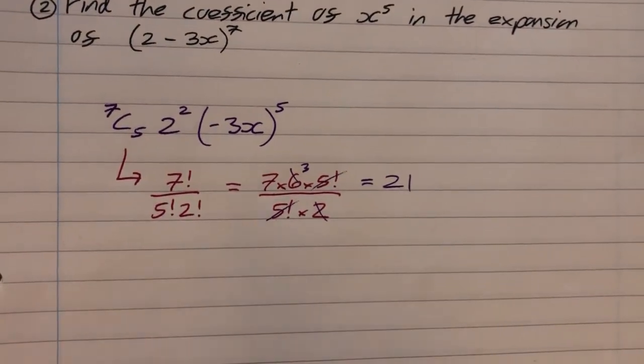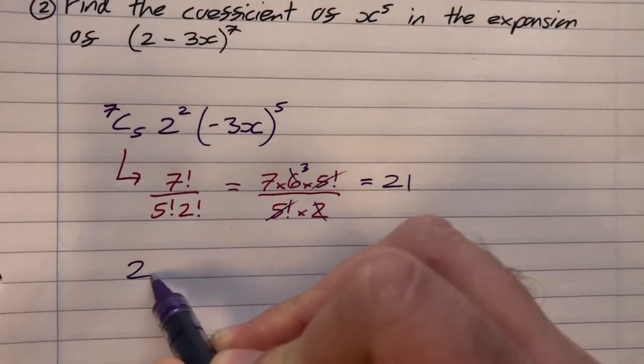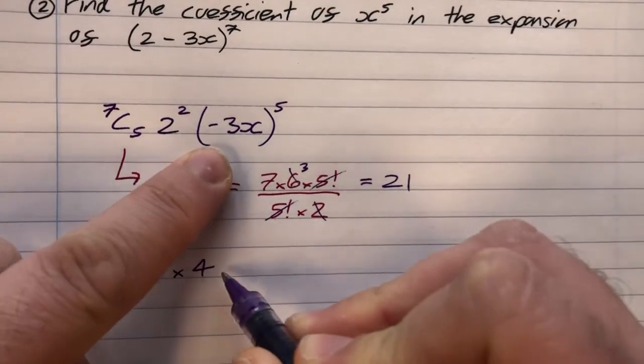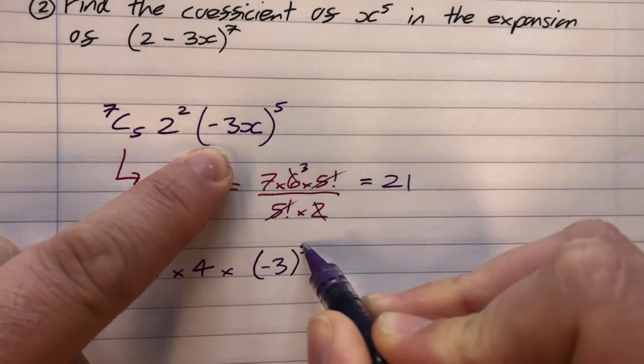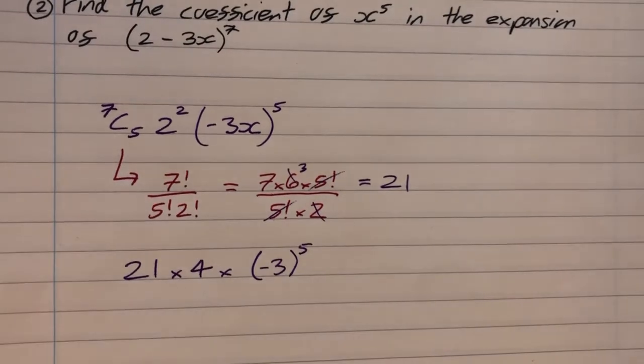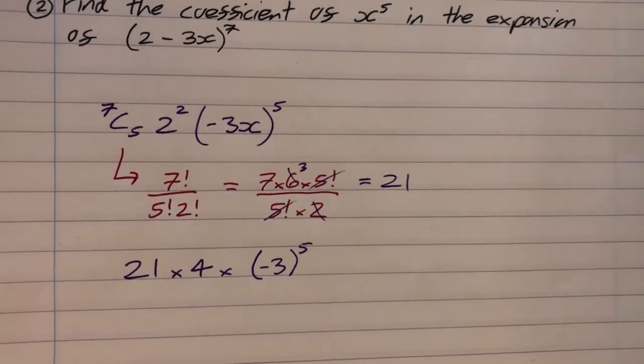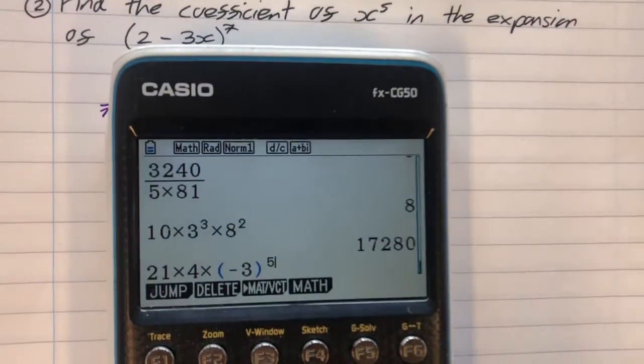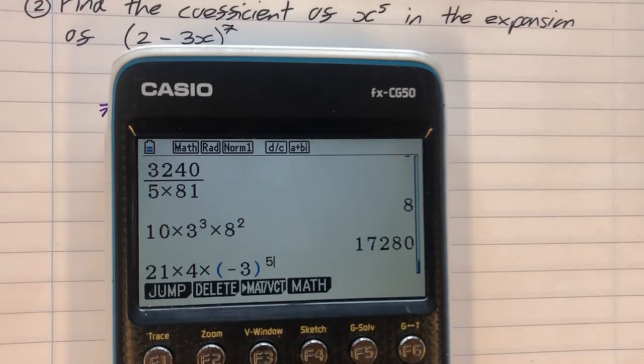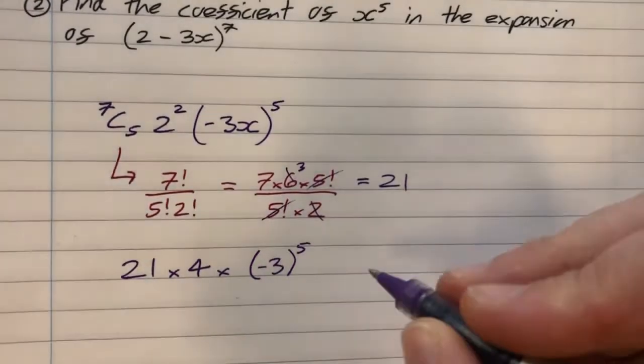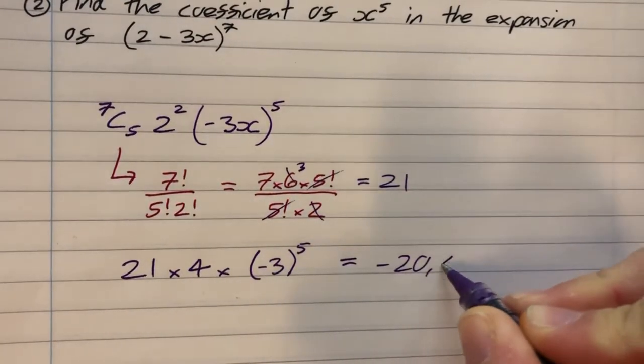So my coefficient, then, of x to the 5 is going to be the 21 from the 7C5 times by the 4, which is 2 squared, times by minus 3 to the power of 5. I don't need to put x to the 5 because the question has just asked for the coefficient of x to the 5, not the x to the 5 term. So I've done put that into the calculator. So it's going to be 21 times 4 times minus 3 to the power of 5. So I've typed all that in. 21 times 4 times minus 3 to the 5. And that is giving me the answer minus 20,412. And that is my answer. Minus 20,412.